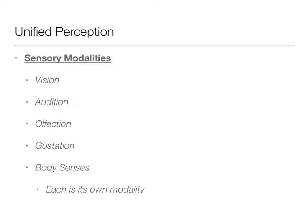First let's go over some definitions. These are all the different sensations we've talked about this semester: vision, audition, olfaction, gestation, and the body senses. Each of these is a sensory modality — vision is one modality, audition is another, and so on. Your textbook doesn't have a chapter dedicated to cross-modal or multimodal perception.